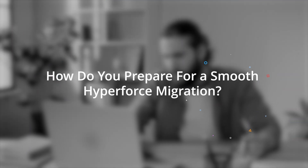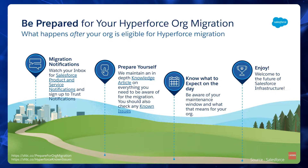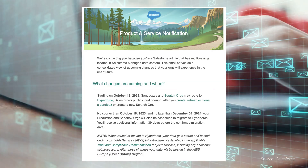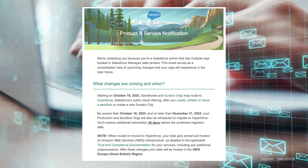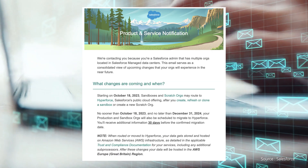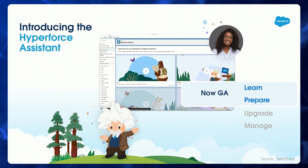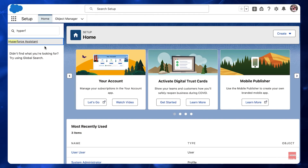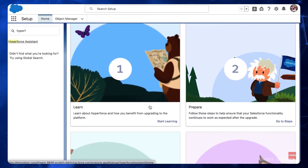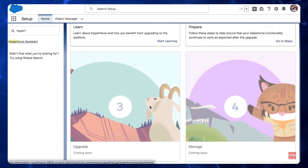So how do you prepare for a smooth Hyperforce migration? Salesforce users with Modify All Data and Manage Users permissions will receive notifications if their organization is marked for Hyperforce migration. Customers will also receive email notifications with an exact schedule approximately 30 days before the migration. Additionally, Salesforce released the Hyperforce Migration Assistant in Winter '24, which allows you to learn more about the migration and perform various checks to ensure your org is ready.